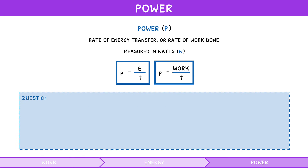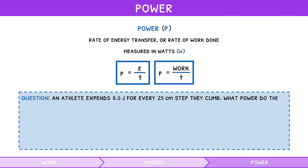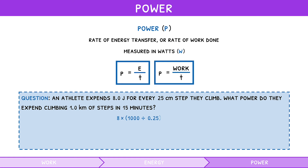An athlete expends 8 joules for every 25 cm step they climb. What power do they exert climbing 1 km of steps in 15 minutes? The total energy expenditure is the energy per step multiplied by the number of steps, which is 32,000 joules. So, the power expenditure is the energy expenditure divided by the time in seconds, which gives 36 watts.